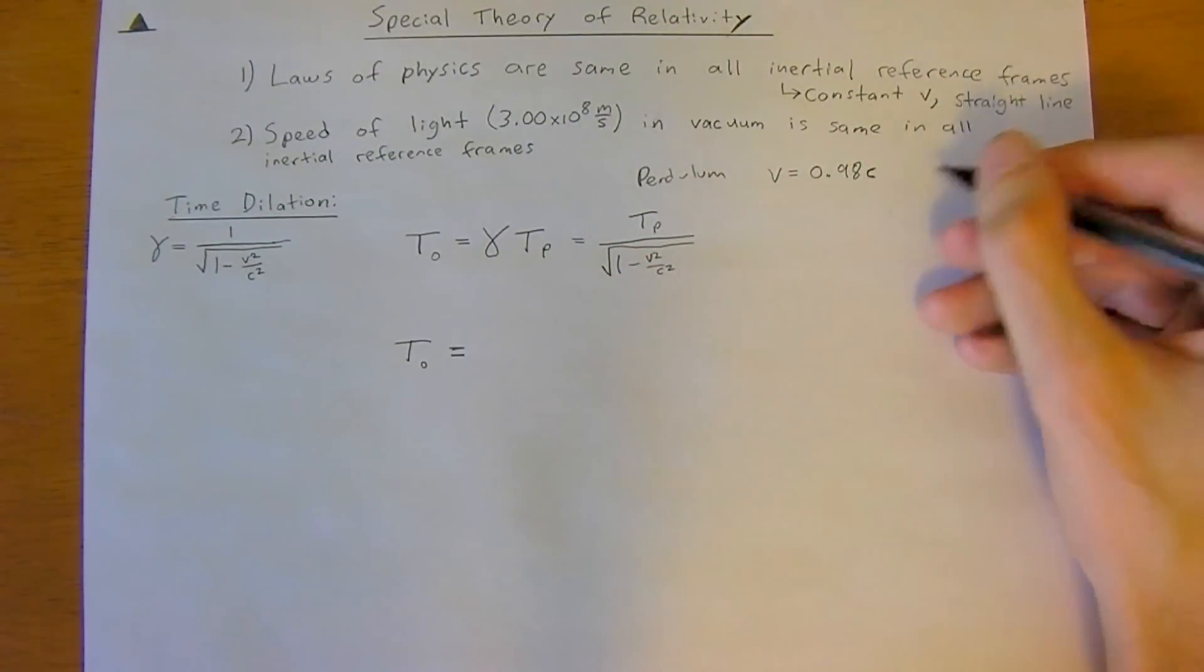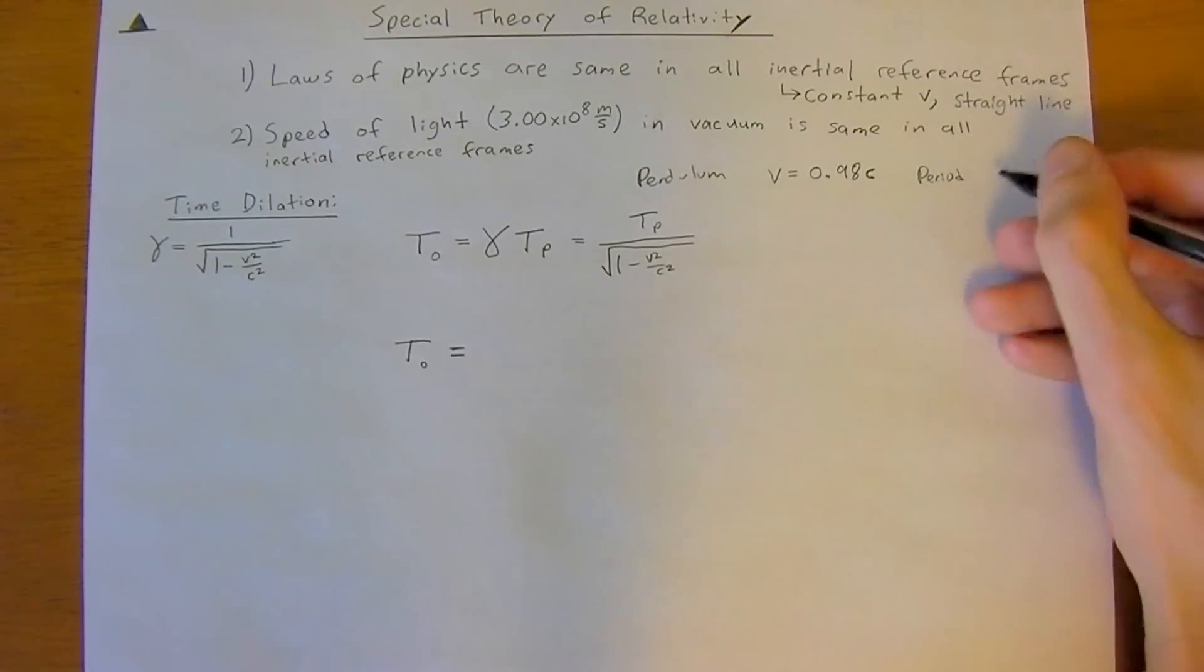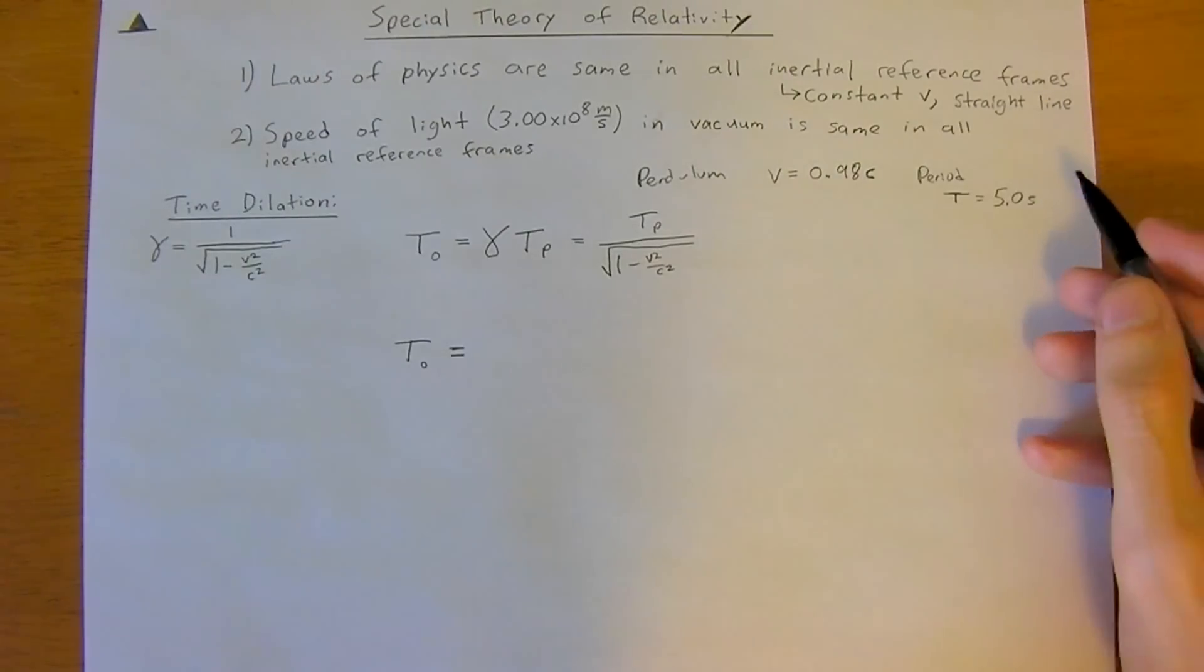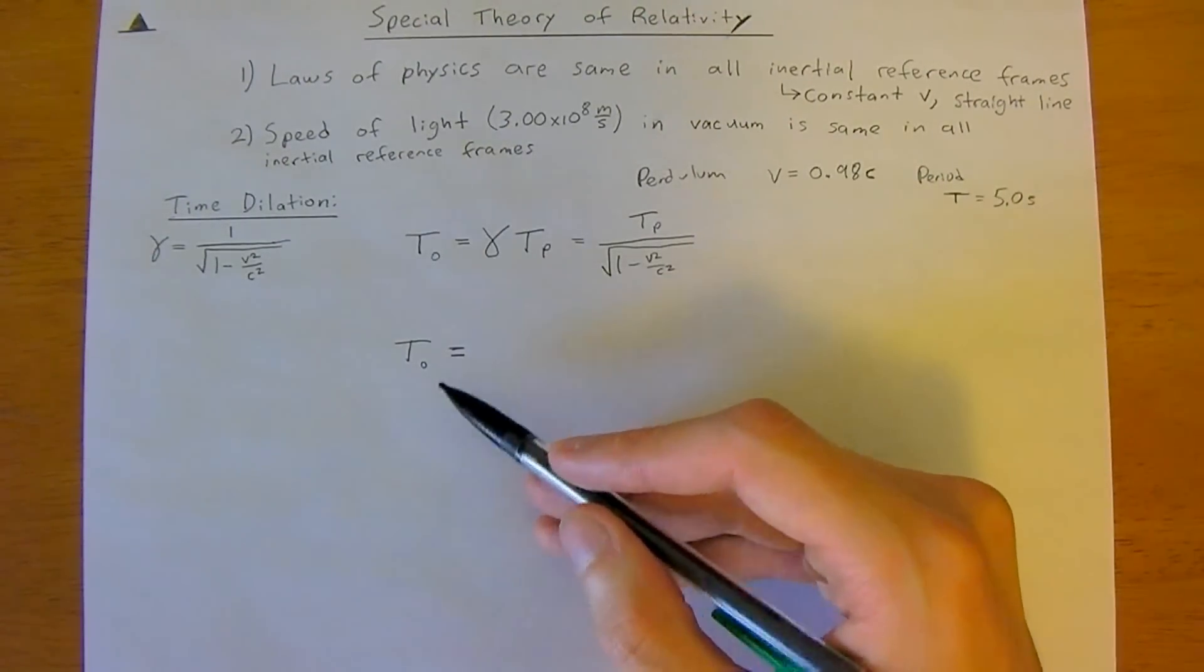And the other thing we need to know is that the period of this pendulum, so the period of the pendulum, is 5.0 seconds. And then, we want to figure out what is the period of the pendulum observed by the external observer.